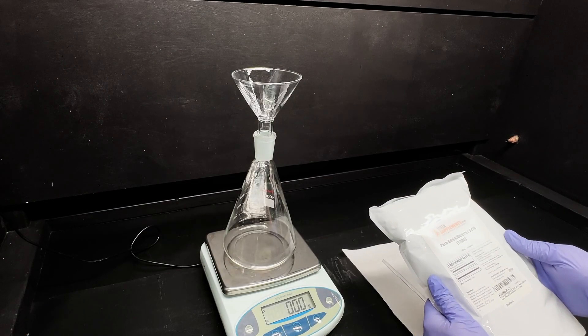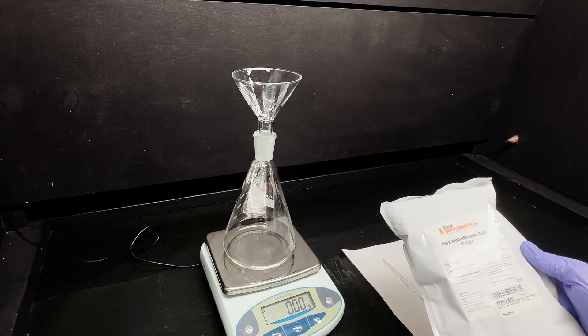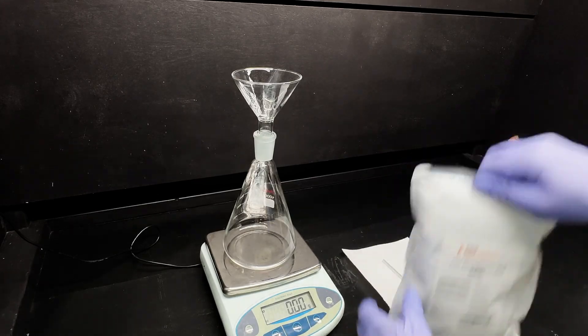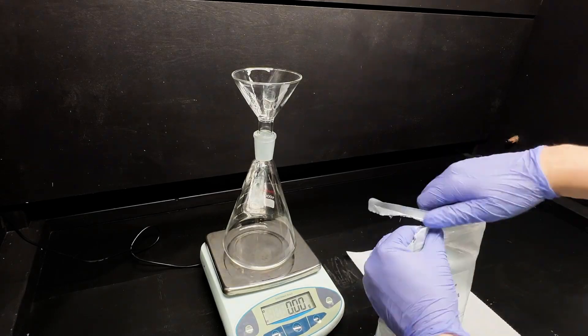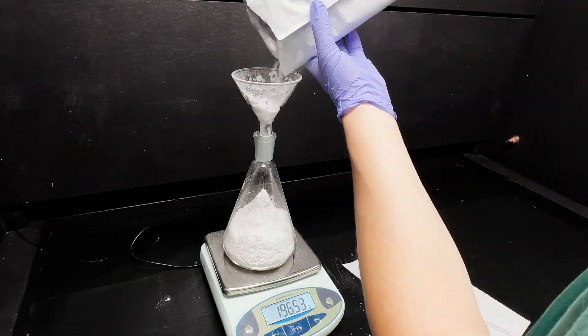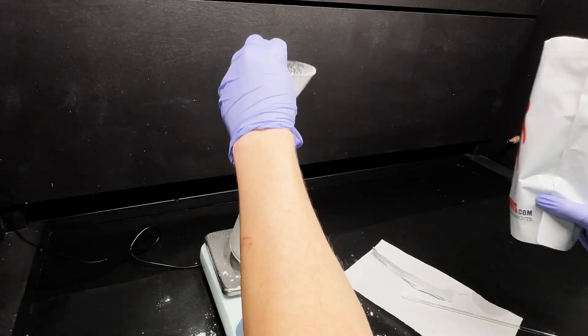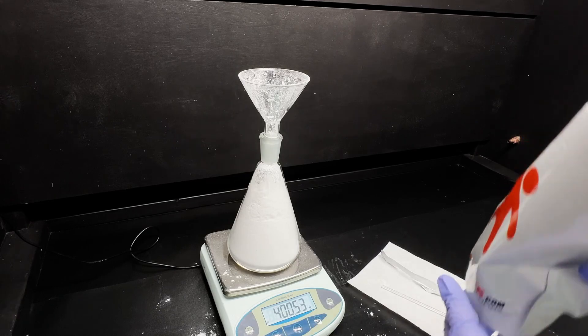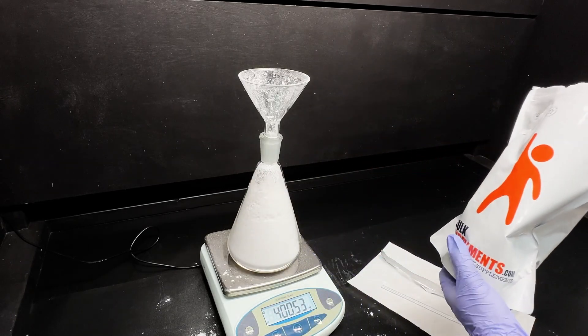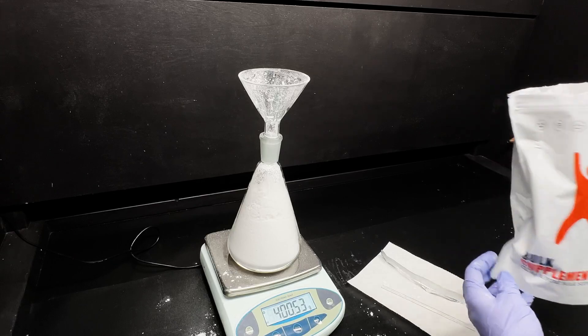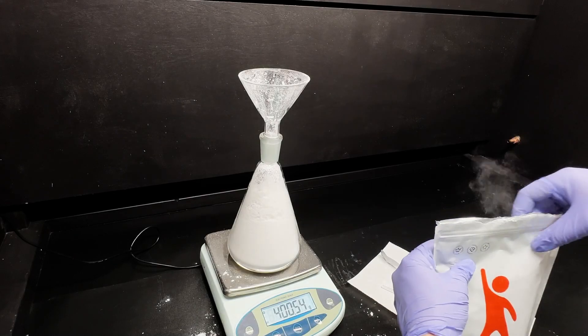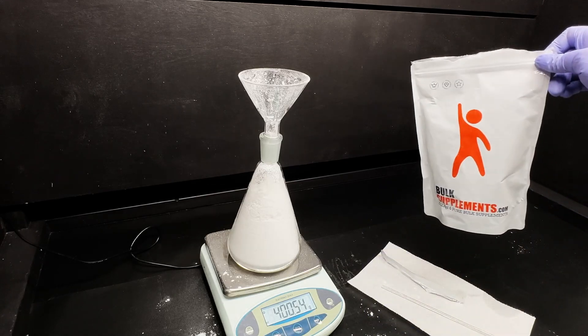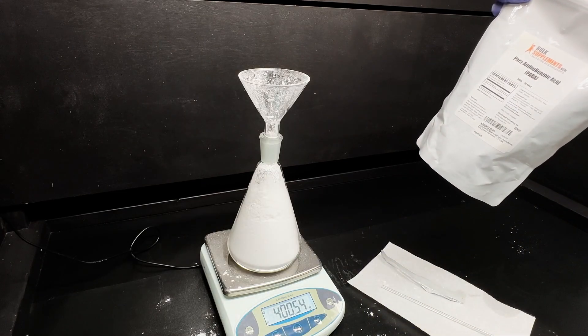All right, here I have vitamin B10, para-aminobenzoic acid, PABA, and we'll charge to the flask, and then we'll start the decarboxylation. All right, let's call it. We got 400 grams in there. Maybe there's a decent amount in the bag, but that can be for future runs. All right, and we'll set this up for distillation, where it'll destructively decarboxylate the para-aminobenzoic acid and collect our aniline.